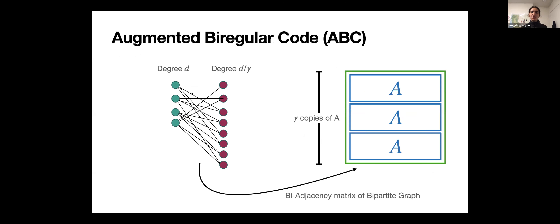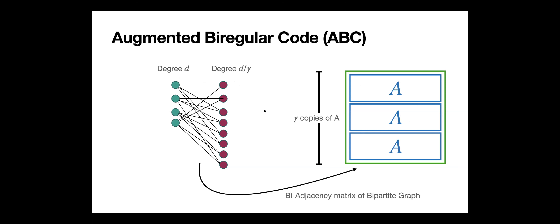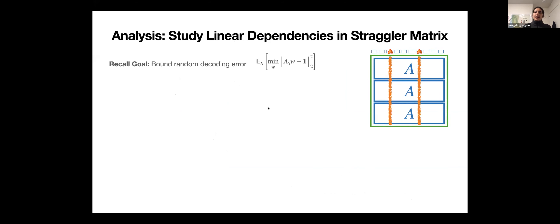The construction is called the ABC code (augmented biregular code). It's based on a biregular graph: we make a random biregular graph where left nodes have degree d and right nodes have degree d/γ for some small constant γ (think γ = 2 or 3). We take the bi-adjacency matrix — a short, fat matrix — call it A, then layer a few copies of A on top of each other until we get a square matrix. This is our code.